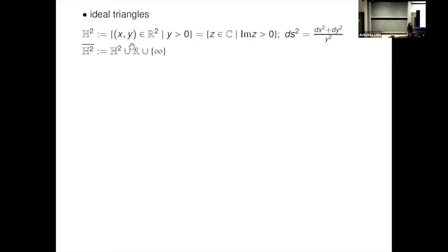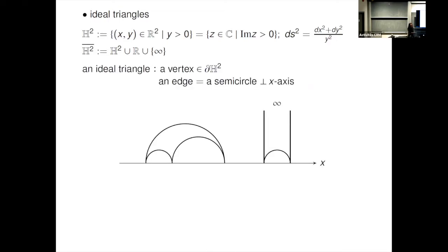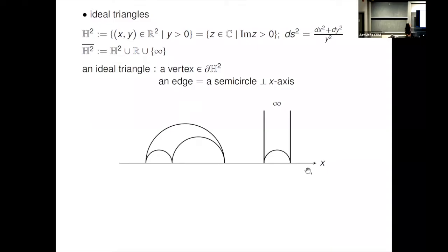We compactify this space by adding the x-axis of the real line and the infinity point. An ideal triangle in this space is a triangle whose vertices are on the boundary — on R or the infinity point — and each edge is a semi-circle on the x-axis. This is a picture of an ideal triangle in this space. If you move one vertex to infinity, you get another ideal triangle. All ideal triangles in H² are congruent because all edges have infinite length, but the area is finite and equals π.